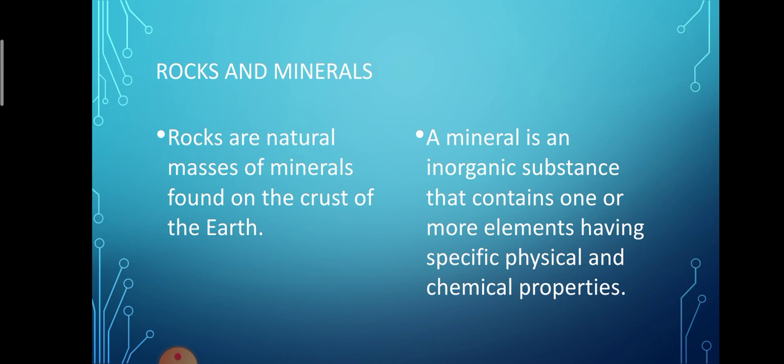Rocks consist of one or more minerals and include hard and compact rocks such as granite and diamond, as well as loose particles like clay, mud, and sand. Rocks may have different colors, sizes, and textures. A mineral is an inorganic substance that contains one or more elements having specific physical and chemical properties. The study of minerals is known as mineralogy. Quartz, mica, etc. are some common rock-forming minerals. Rocks containing a particular metallic mineral in large quantity are called ores. For example, bauxite is an ore of aluminium and hematite is an ore of iron.